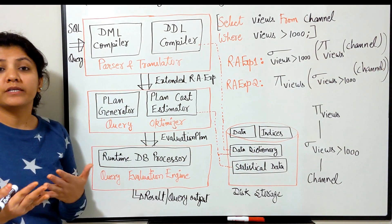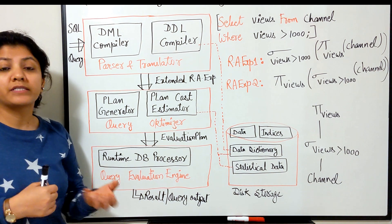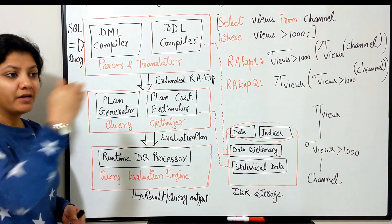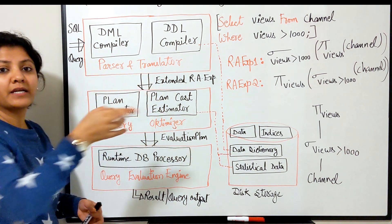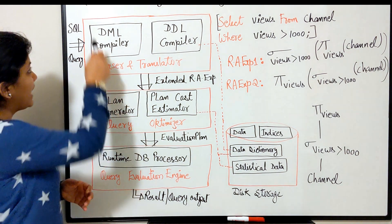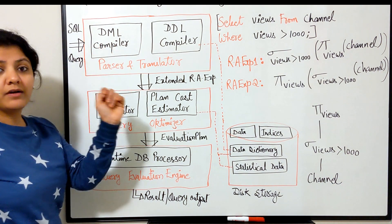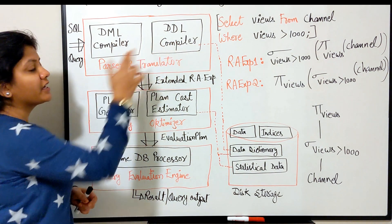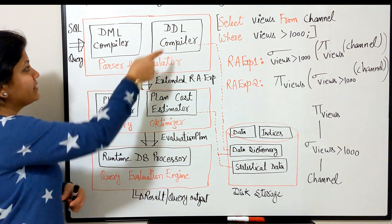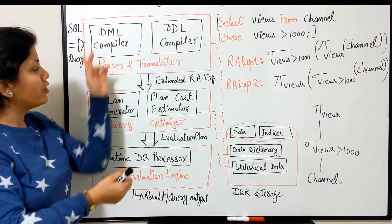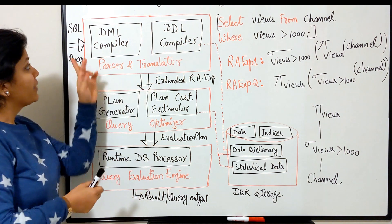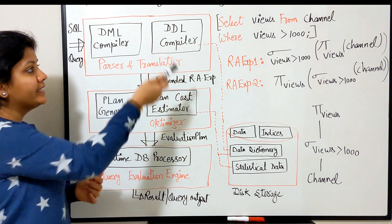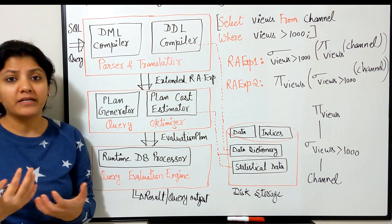SQL is easy for us to understand because it's English-like. But for the system, the table names and query need an intermediate transformation. When a query comes in — whether a DML command (data manipulation language) or a DDL command (data definition language) — we have separate compilers for both types. This parser and translator component has two types of compilers, and whichever type of query comes in, the respective compiler gets activated.